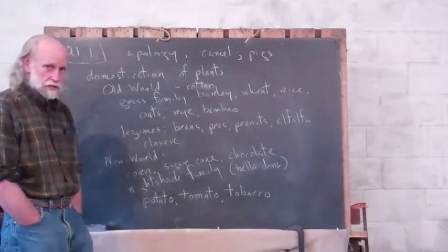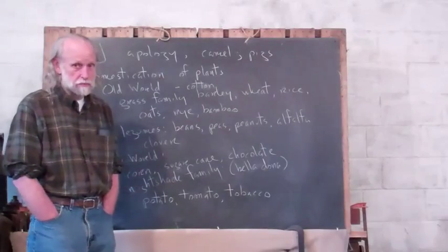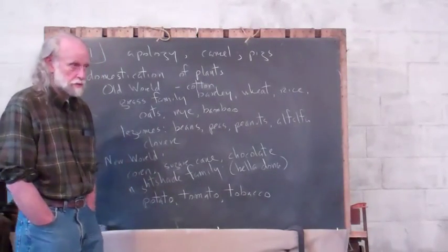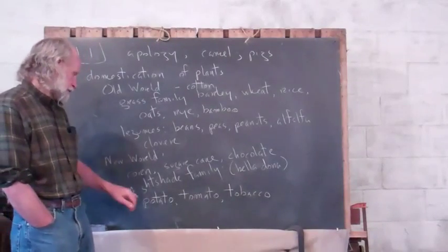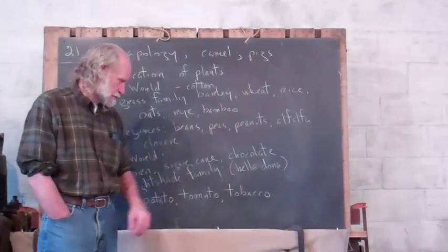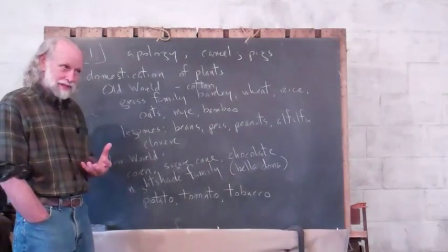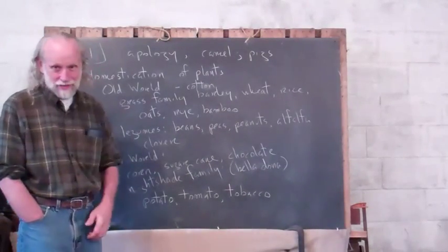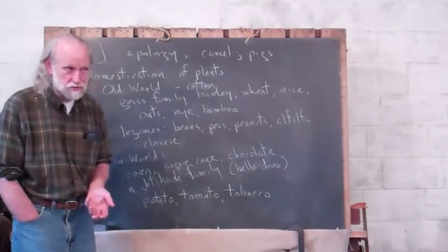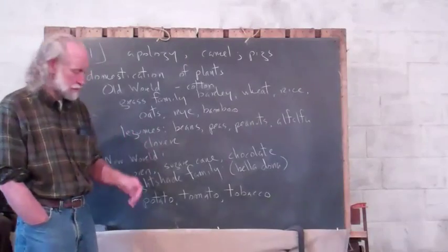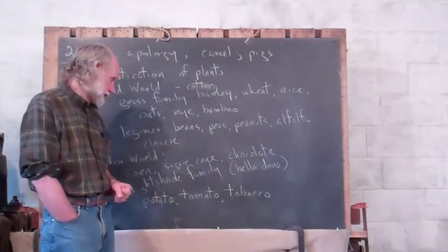And the nightshade family. Now, the nightshade family is actually, has got a lot of poisons in it. Nightshade growing around here is poisonous. But in that family, we've got the potato and the tomato and tobacco. Imagine how important the potato has been. It shaped Ireland's history. It's the reason why part of Boston is Irish, because of the success of the potato and then the potato famine.